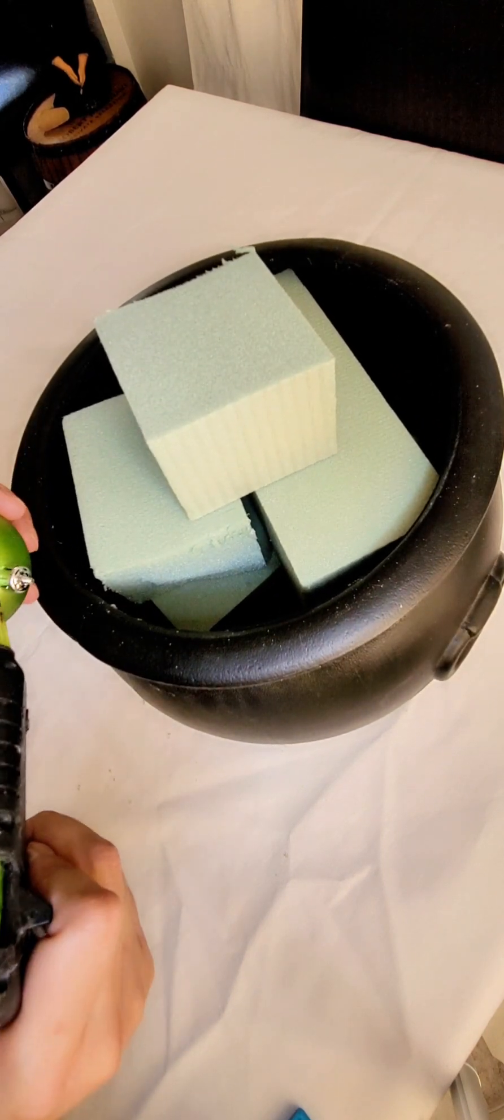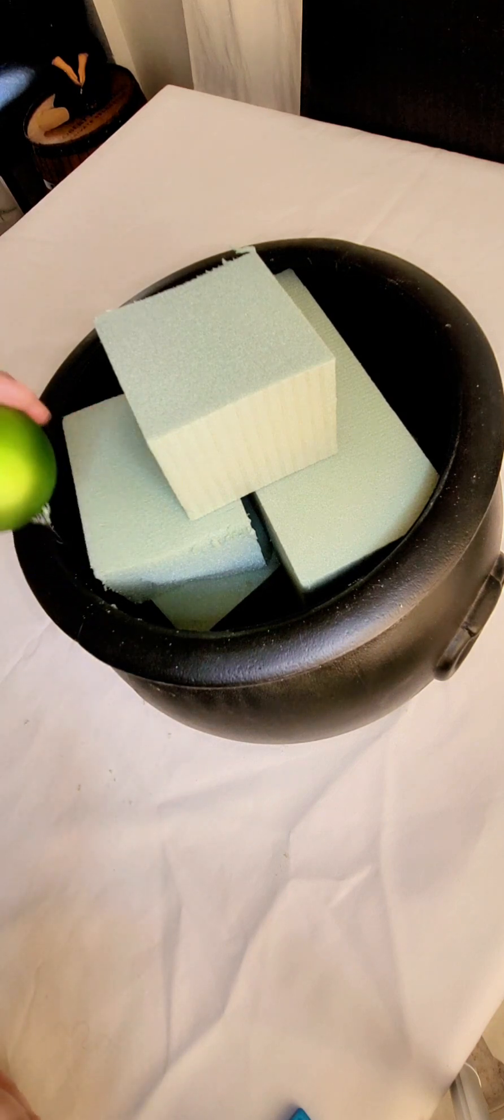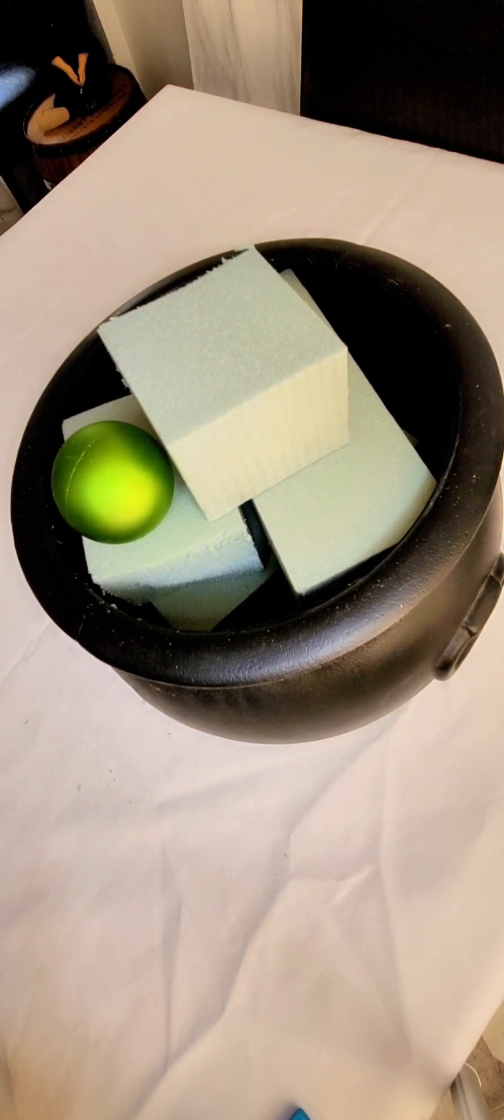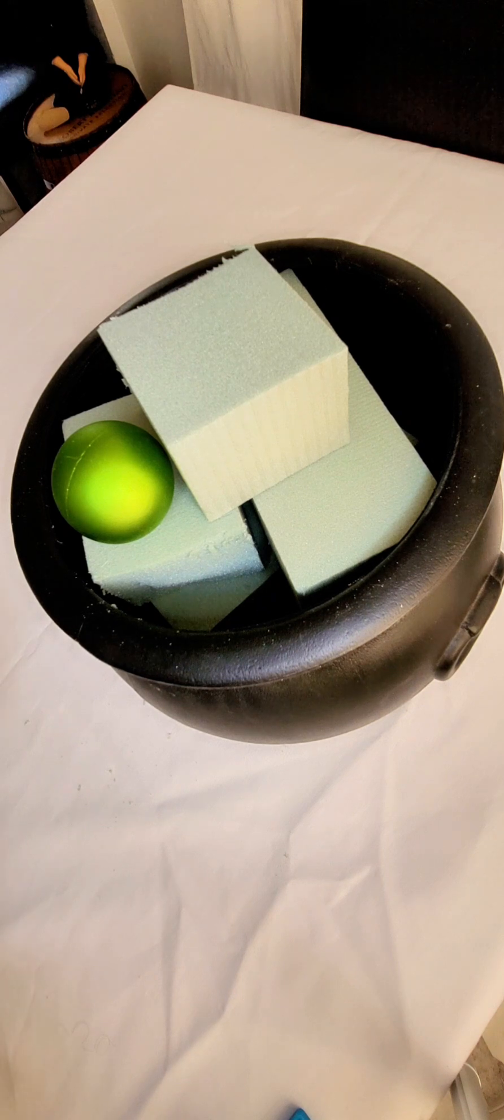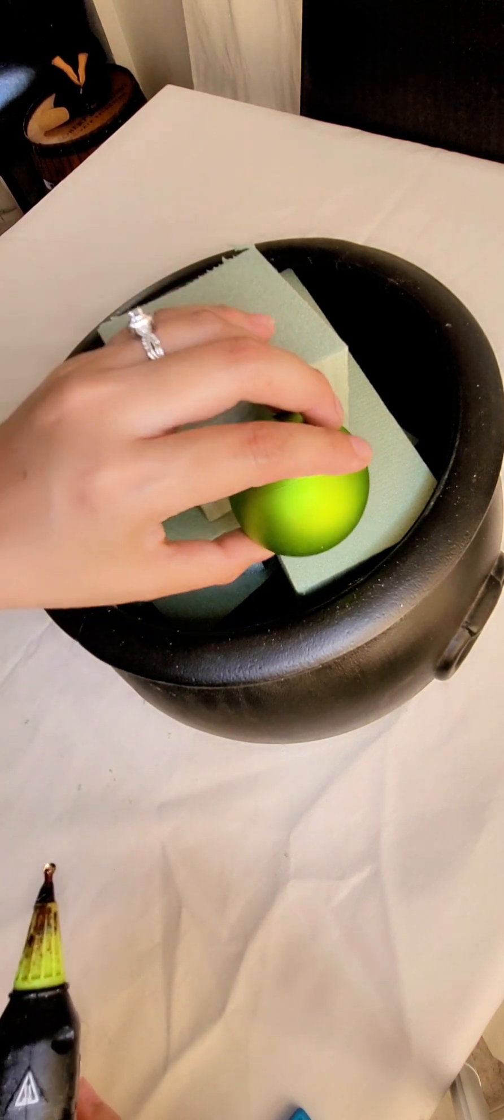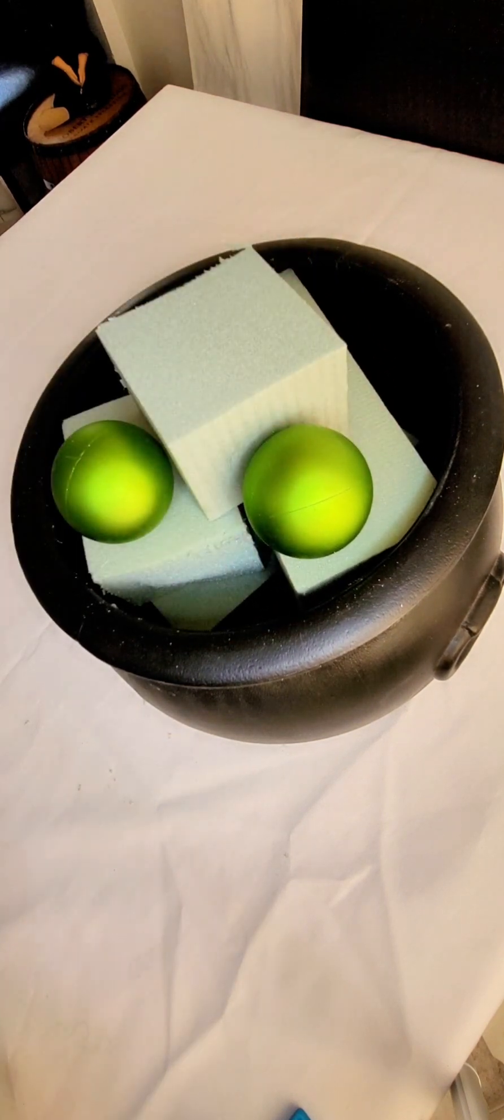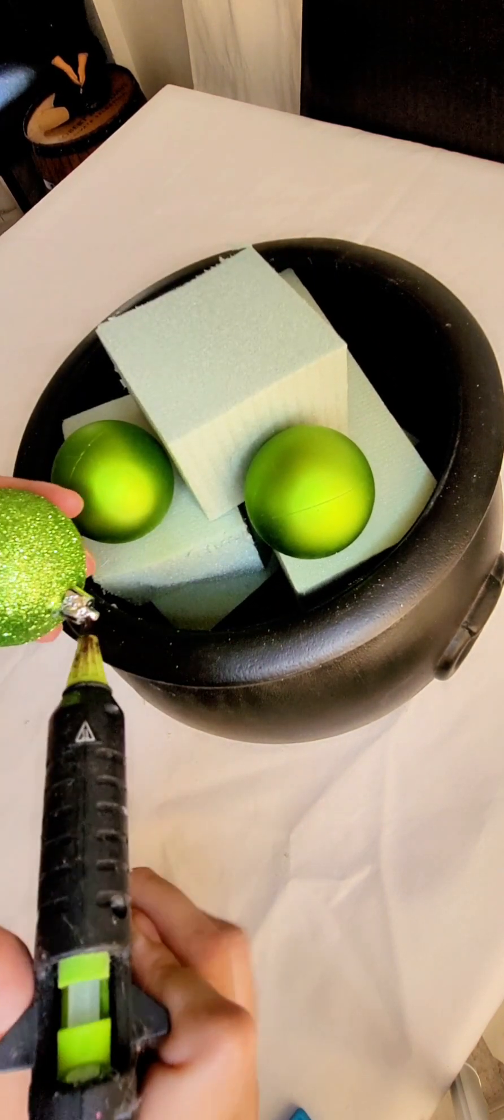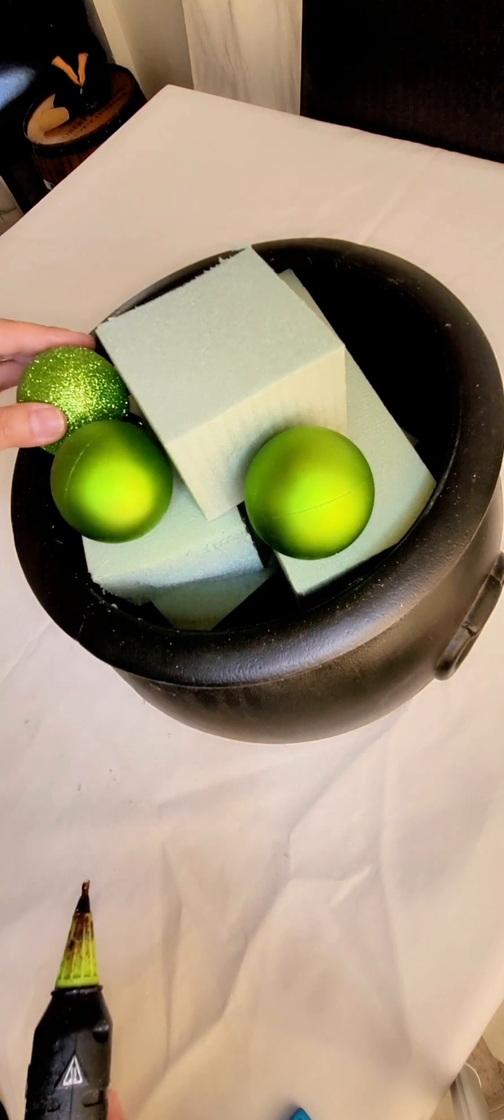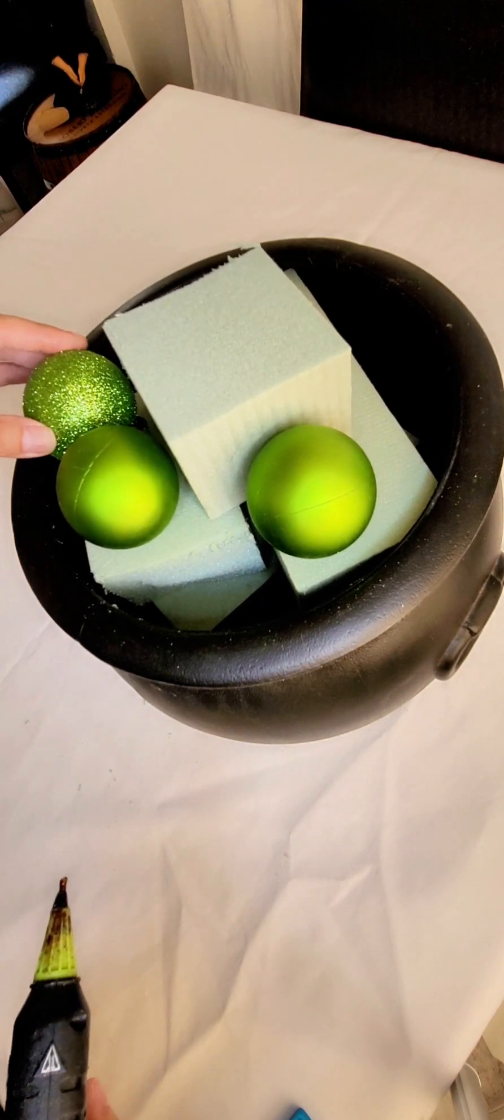I begin to glue them and attach them to the top of the cauldron. This pack of ornaments had a variety of different textured ornaments, so I choose random ornaments and place them around the cauldron.